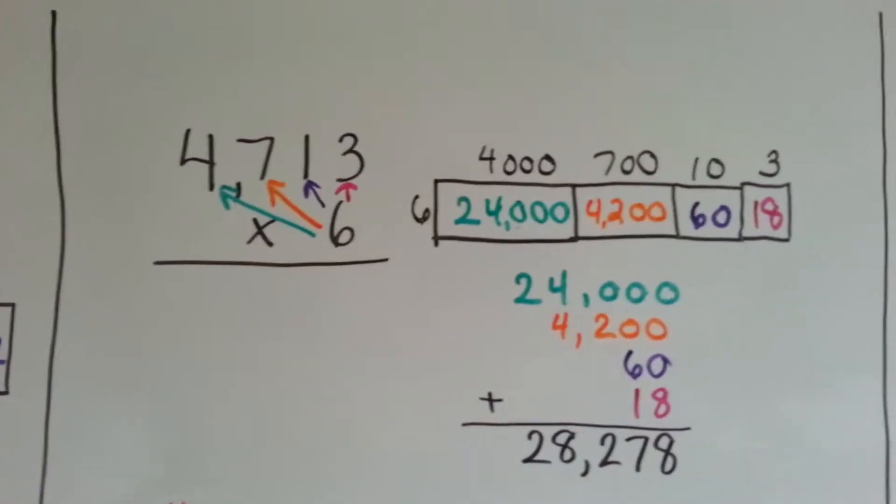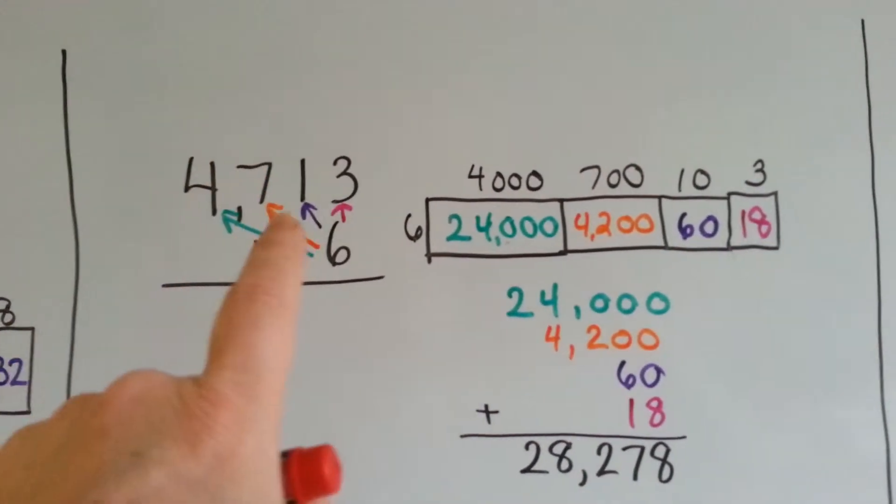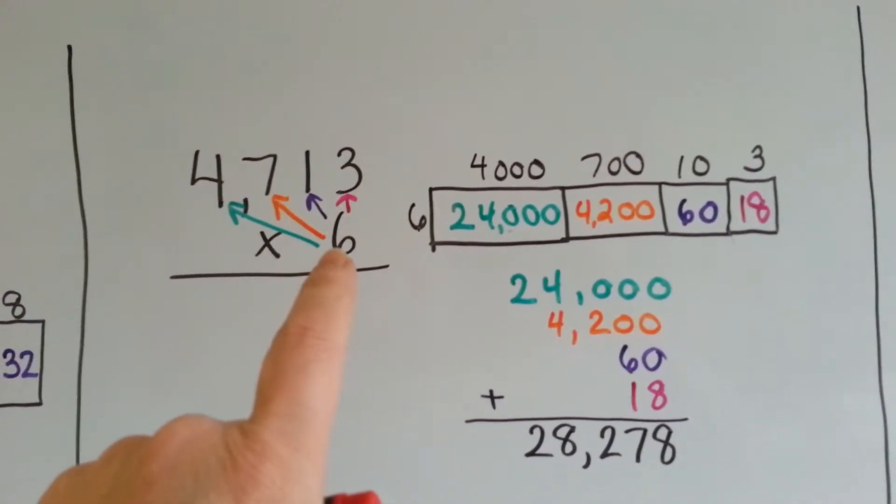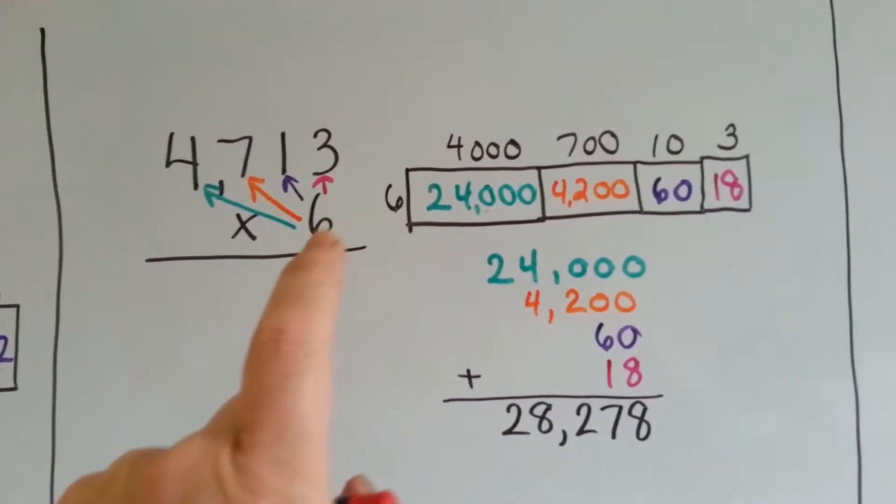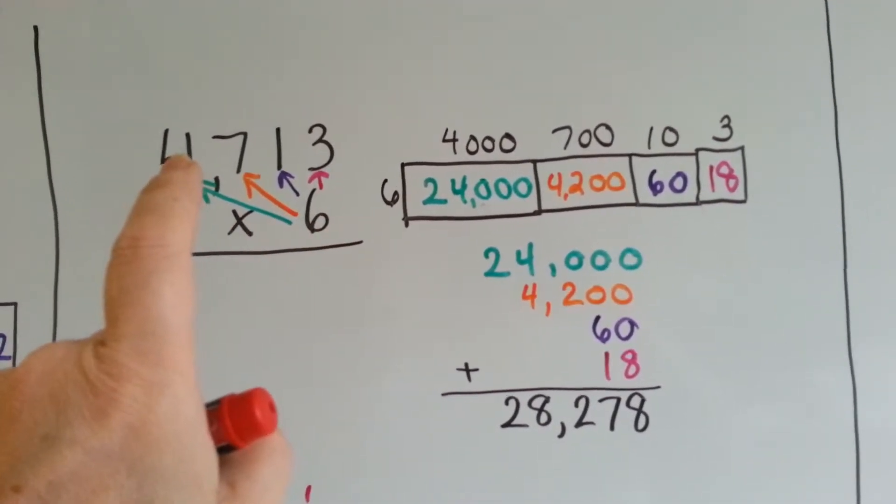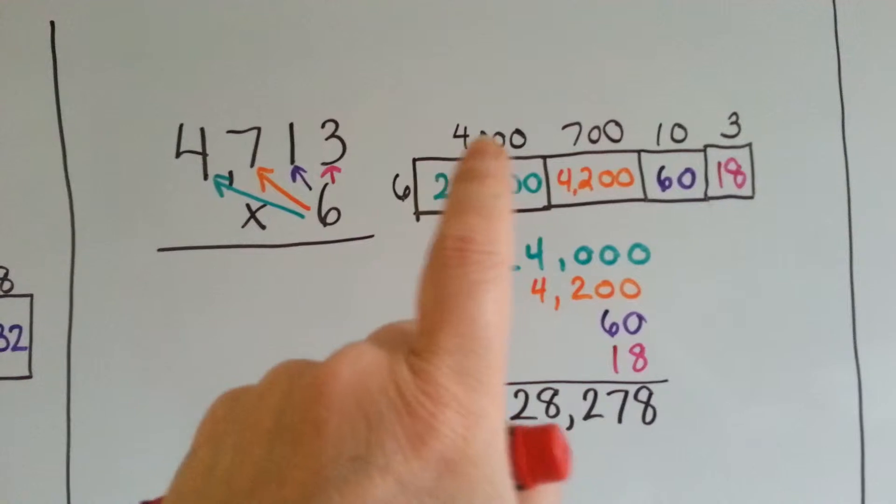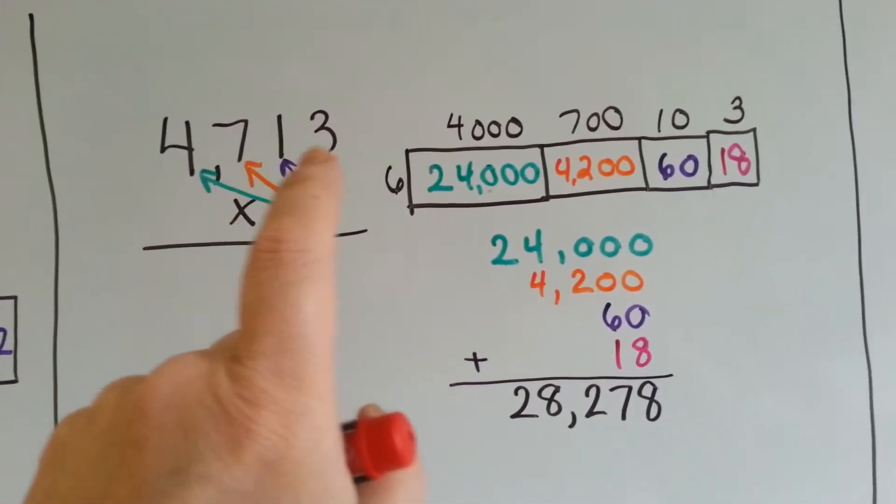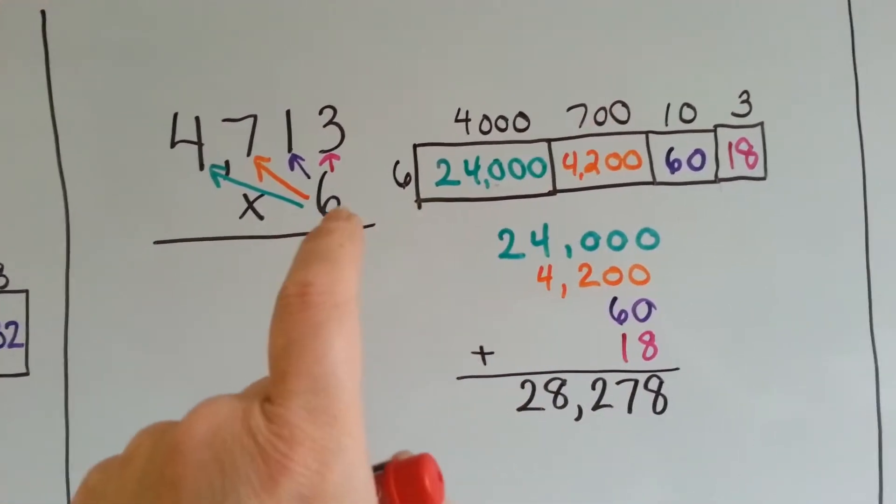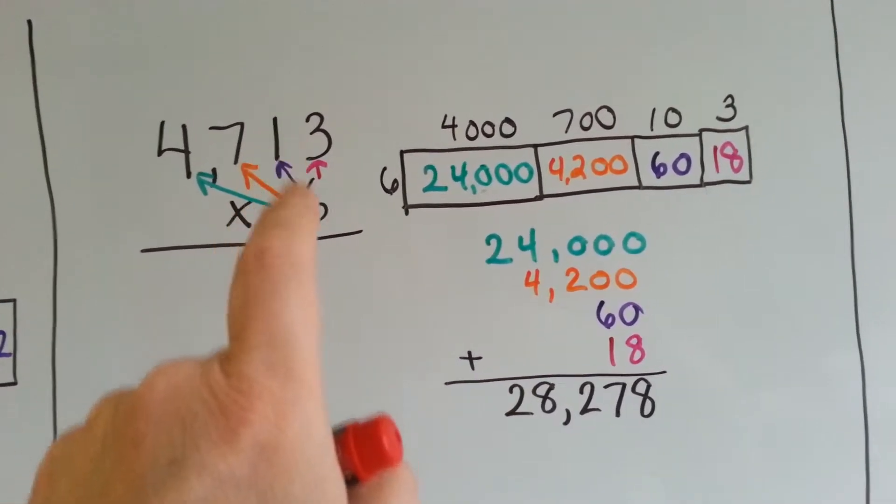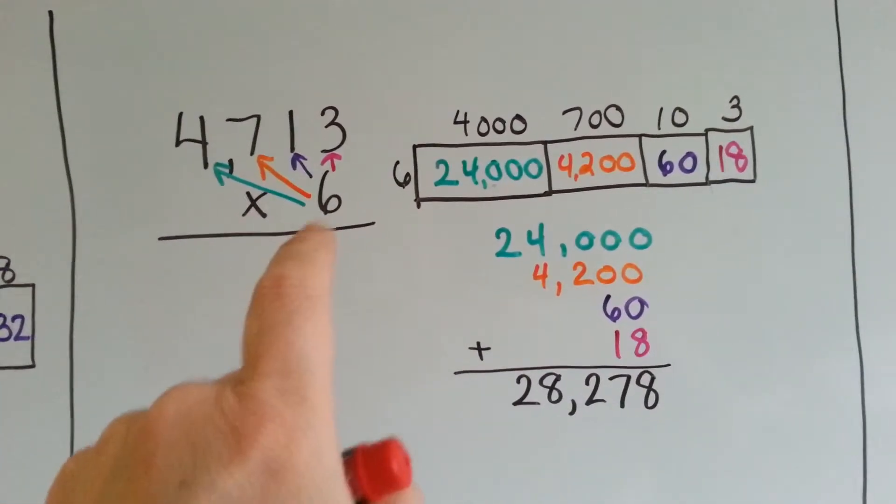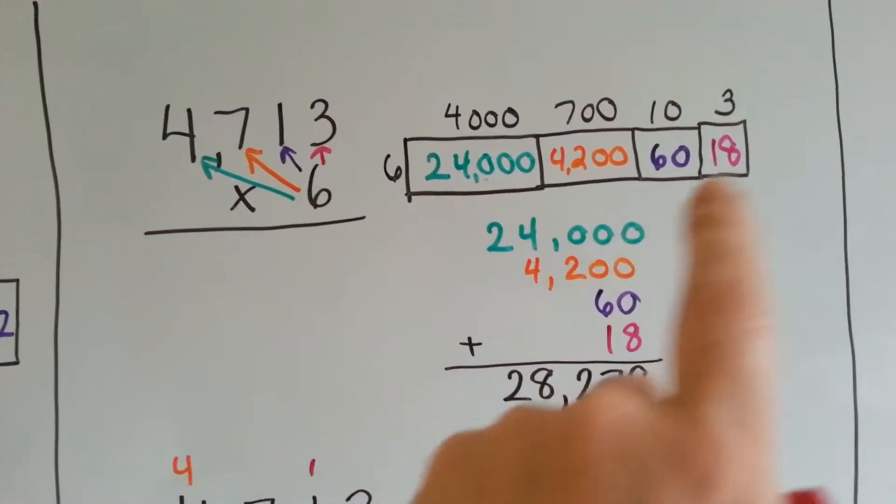We've got 4,713 times 6. So, here we've got the 6 times the 4,000. See, it's in the thousands place. We've got 6 times 700. It's in the hundreds place. We've got 6 times 10, because that's in the tens place. And we've got 6 times 3. It's in the ones place.